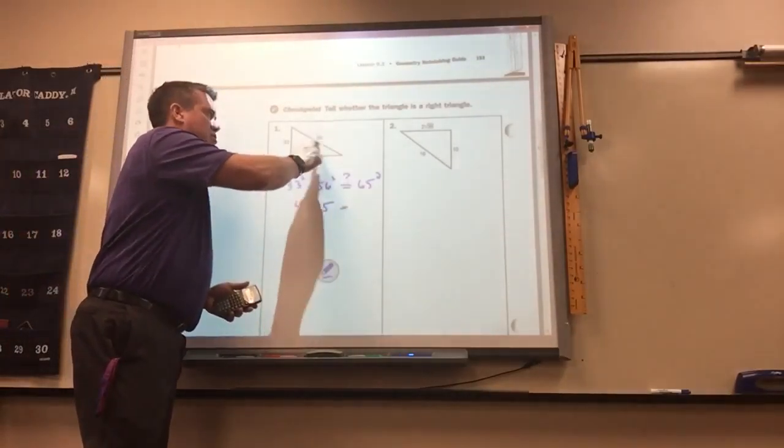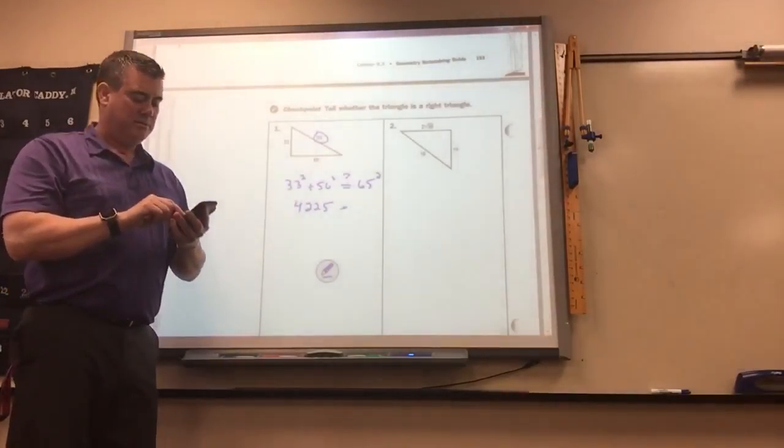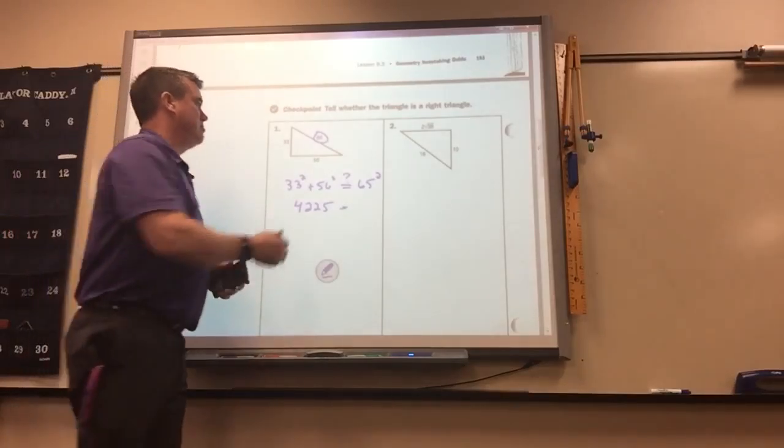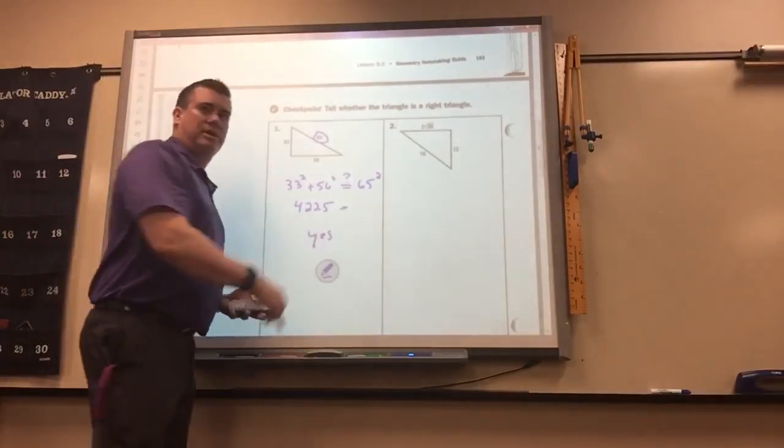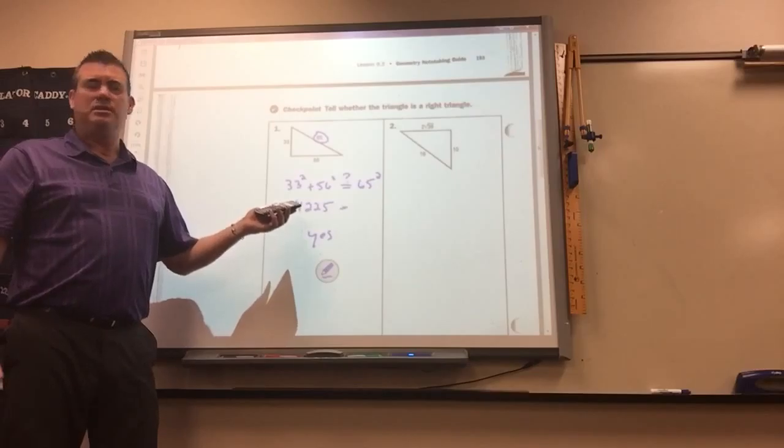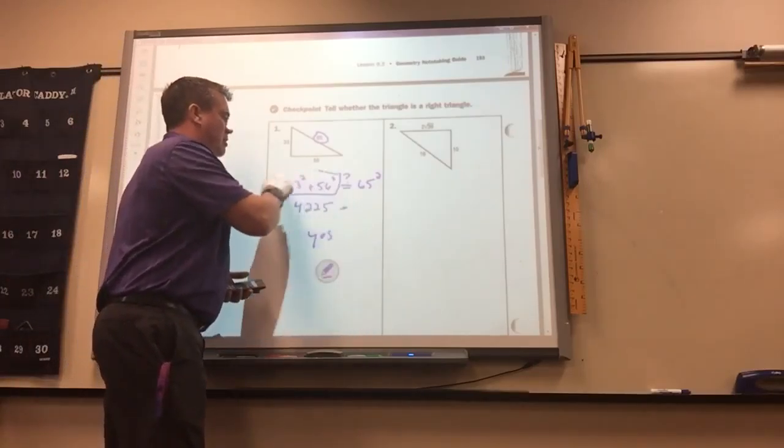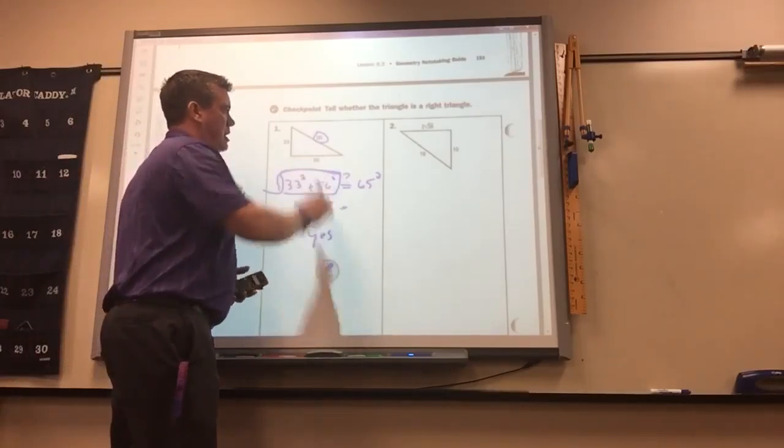Now the quick way, instead of just figuring that out, just square root this and it should end up at 65. It does, so that's yes. You guys understand what I just did there? Because you can just use the Pythagorean theorem and then square root it and see if you get that.